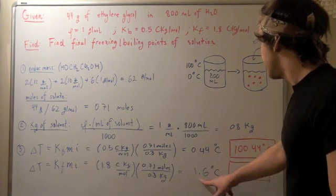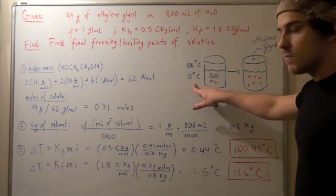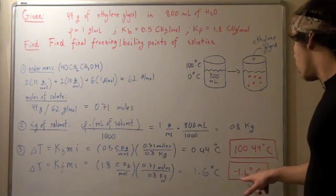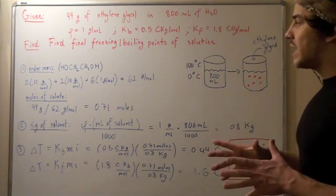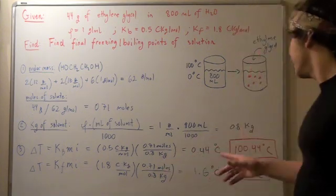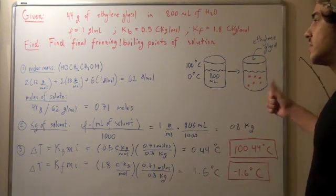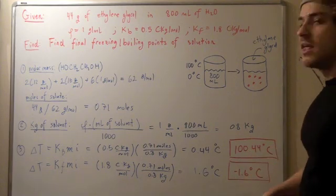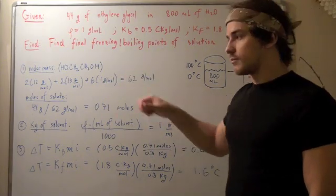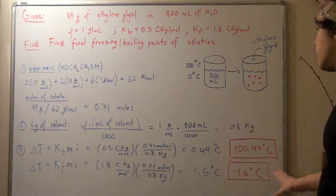And now, we have to take this and subtract it from 0. And we get negative 1.6 degrees Celsius. Now, once again, if you want to learn why the boiling point increases and the freezing point decreases, then check out the link below. But otherwise, this is our final result.